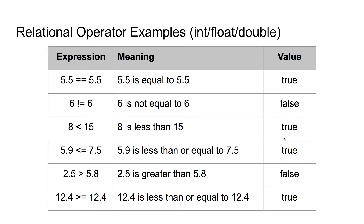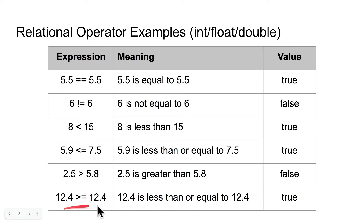We have the less than or equal to operator, and the expression means 5.9 is less than or equal to 7.5, which is a true expression. We have the greater than operator, and the expression means 2.5 is greater than 5.8, which is a false expression because 2.5 is less than 5.8. And we also have the greater than or equal to operator, and the expression is saying 12.4 is greater than or equal to 12.4, which is true because they are equivalent.